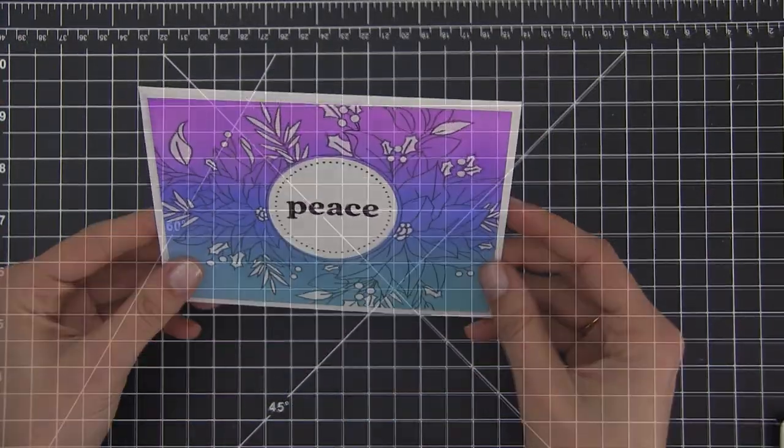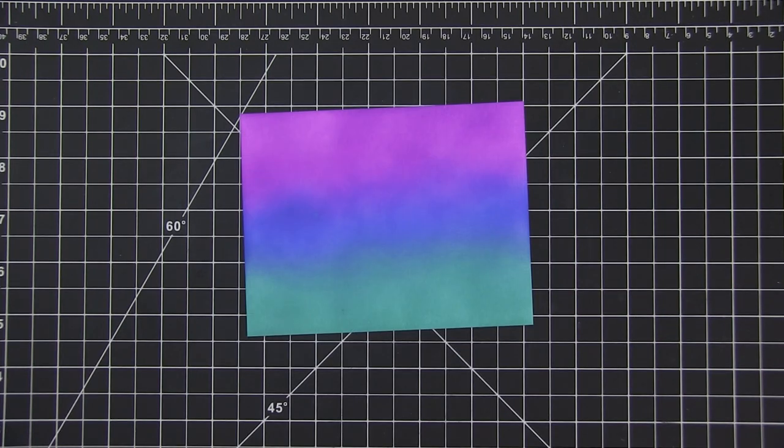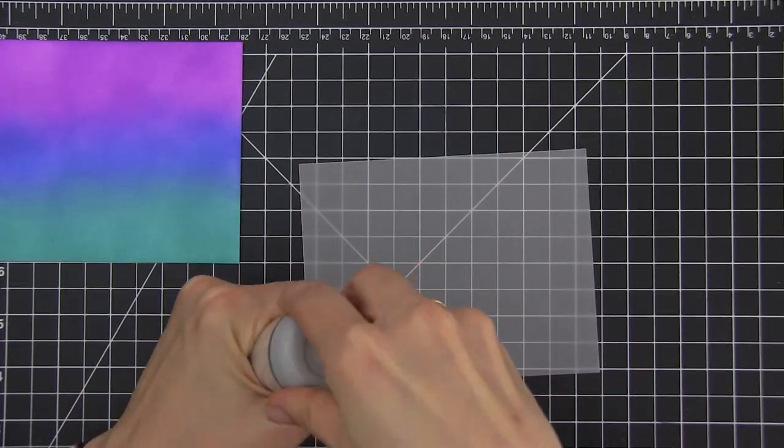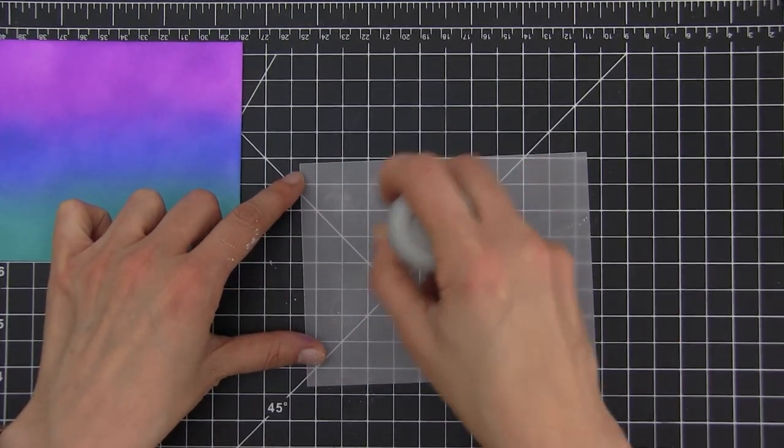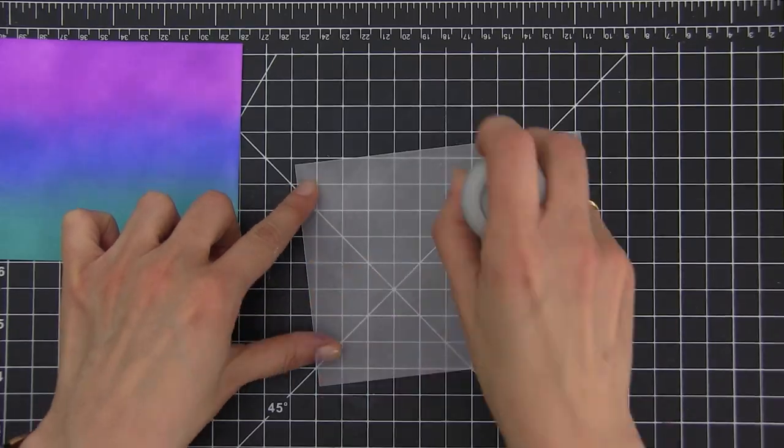First card is ready. Let's move on to the second one, and we are going to be using the same background, but this time we are going to white heat emboss it on a piece of vellum cardstock. This is a really nice option if you're looking for a softer look for your cards.